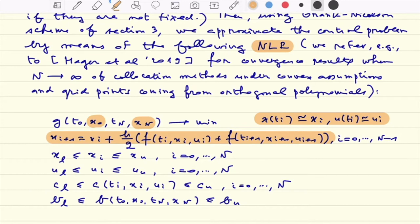With the semantics that x of ti is approximated by xi and the same is true for u of ti which is approximated by ui. So this is just the rough idea.